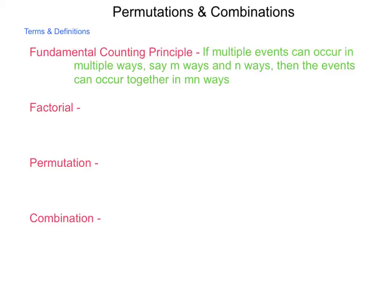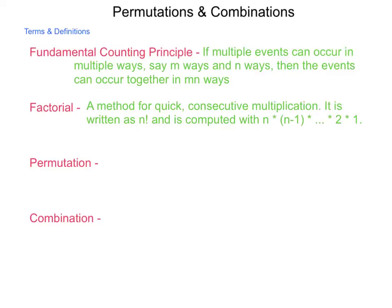Our next term is Factorial. A method of quick consecutive multiplication. It's written as N factorial. The factorial looks like an exclamation point. And it's computed with that number N times the number below it, times every natural number until you get times two times one. So, if you have ten things that have to be done, you can do ten factorial. It would be ten times nine times eight all the way down to times two times one.